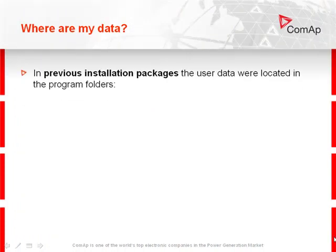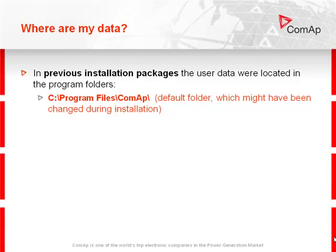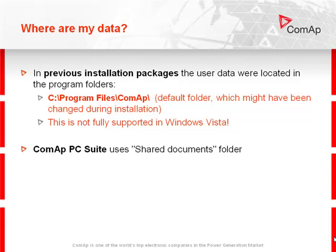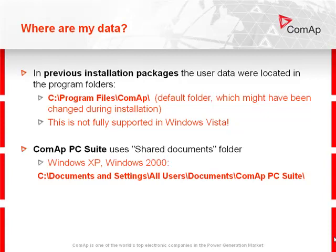Where are my data now? In previous installation packages, the user data are located in the program files — see Program Files, COMAP — the default folder, which might have been changed during installation. This is not fully supported in Windows Vista. COMAP PC Suite uses the Shared Documents folder. In Windows XP and Windows 2000, it is located at Documents and Settings or Users, Documents, PC Suite.